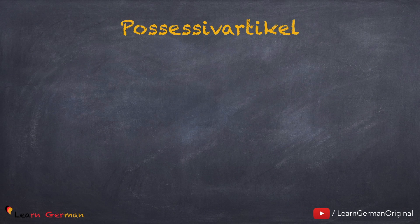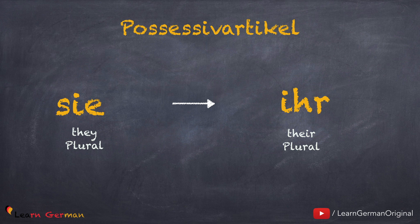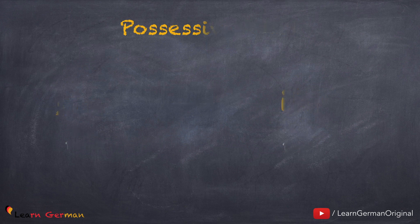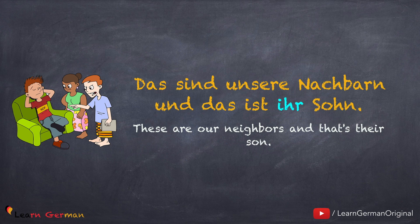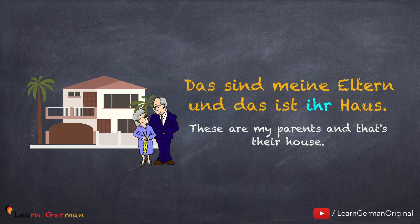Ihr is also used as a possessive article for sie in plural. Here also, sie is in the third person. If you want to revise personal pronouns and possessive articles, you can watch our videos on the same — links are in the description. For example: 'Das sind unsere Nachbarn und das ist ihr Sohn.' You would use the personal pronoun sie for the neighbors — indirect, third person — and the possessive article would be ihr. Similarly: 'Das sind meine Eltern und das ist ihr Haus.' Meine Eltern are indirect, third person, plural. Therefore, the correct possessive article is ihr klein.